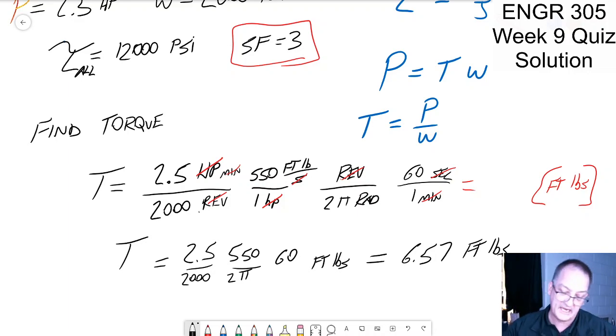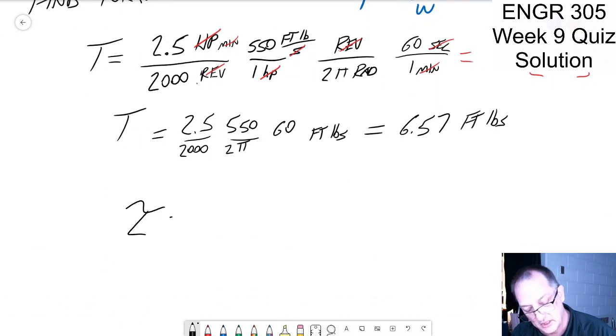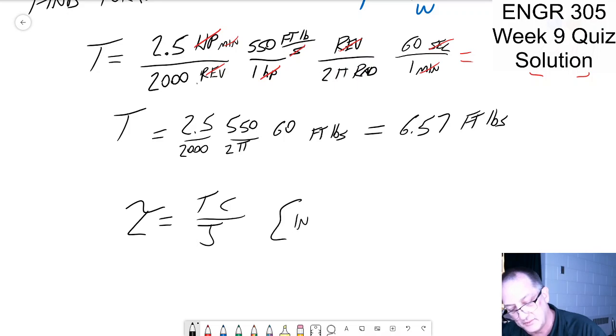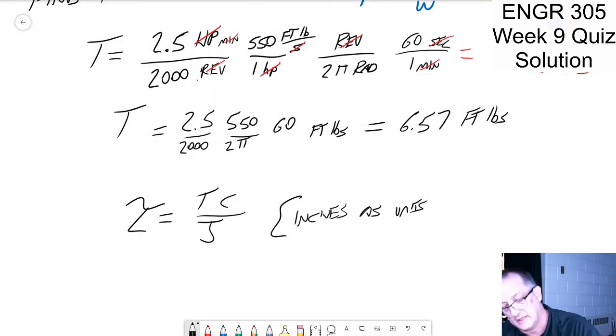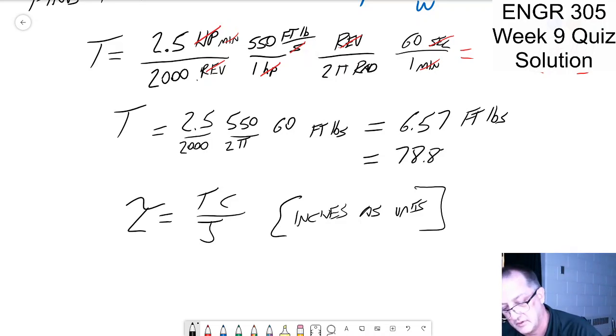But here's the problem, I'm going to take this answer right to where this plugs in. Shear is equal to tc over j. And this whole thing I want to be in inches as units. And so I'm just going to take this right here and say well instead of foot pounds then I've got times 12 equals 78.82 inch pounds.